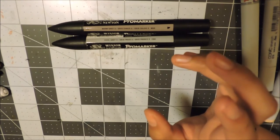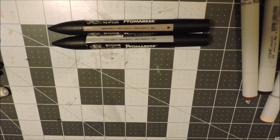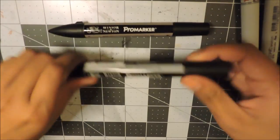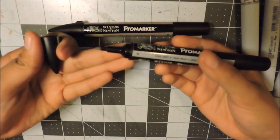These ones come with a bullet nib and a chisel nib. They also have the Windsor & Newton brush markers but I don't own any of those.